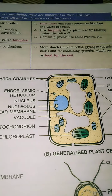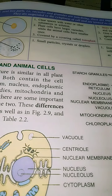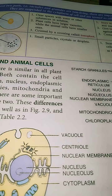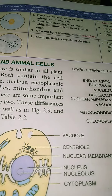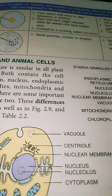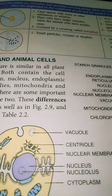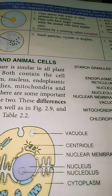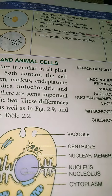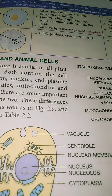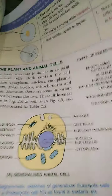In conclusion: animal cells are smaller than plant cells; cell wall is present only in plant cells; plastids are present only in plant cells; large vacuoles are present only in plant cells; and in animal cells, lysosome and centrosome are present. These are the major differences between plant and animal cells.